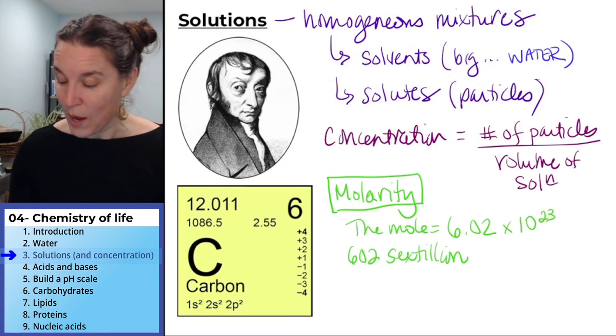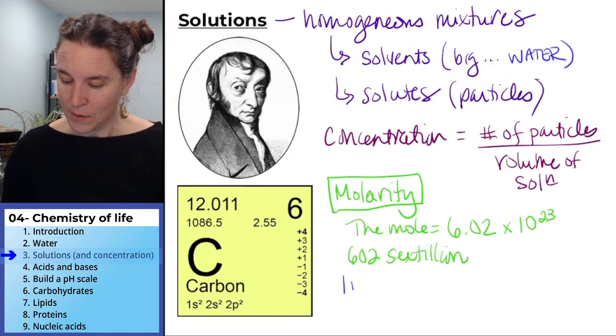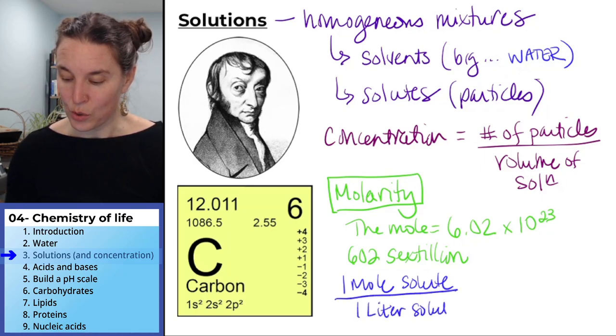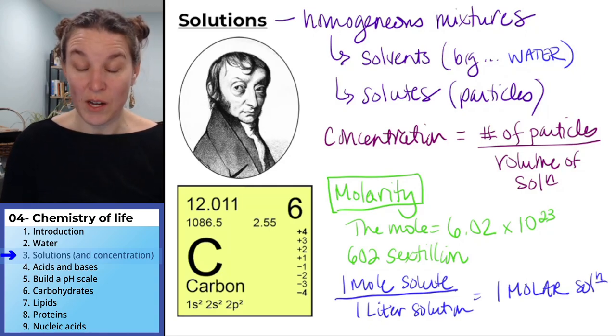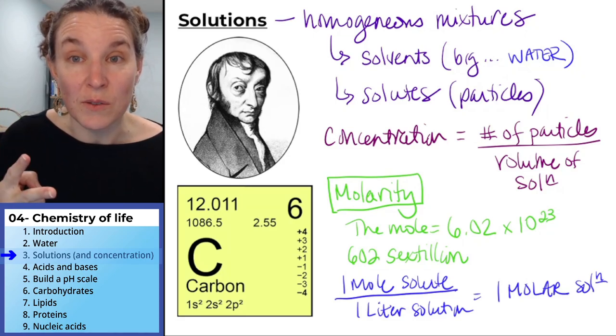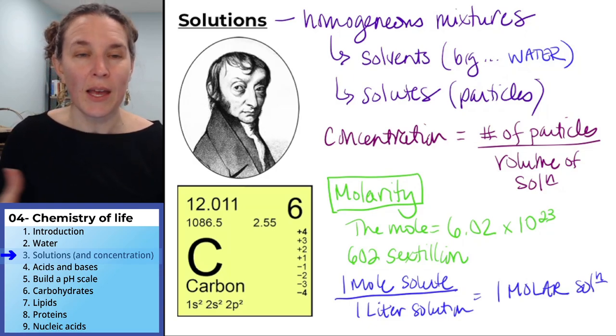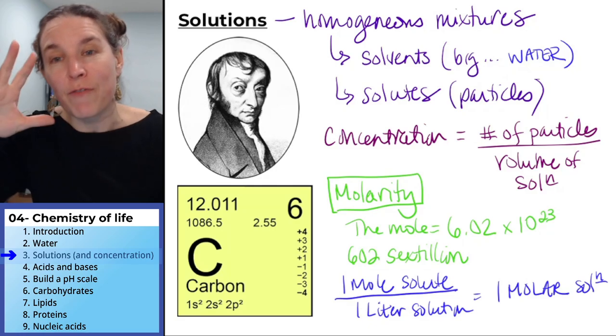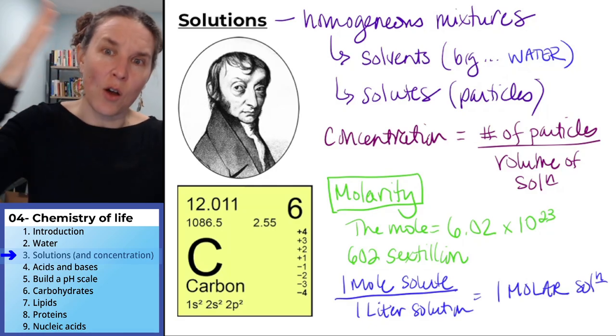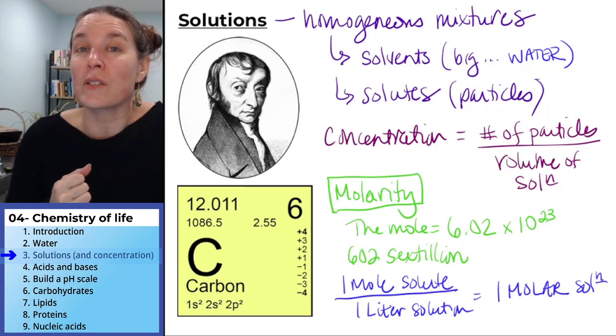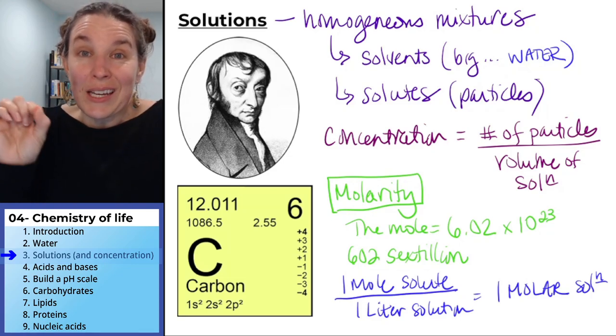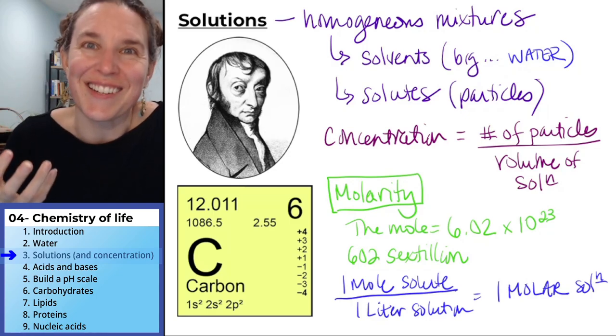Now, the interesting thing is that if you have one mole, one mole of solute in one liter of solution, you have a one molar solution. So it becomes a measure of concentration. If you have two moles of solute in one liter of solution, then you have a two molar solution. I could say to you, okay, I have a 10 molar solution and I have a five molar solution. Which one's more concentrated? And you would say, homegirl, it's a 10 molar solution. It's more concentrated because there are 10 moles of molecules in that one liter of solution instead of five moles of molecules.